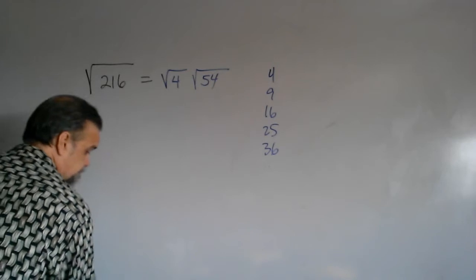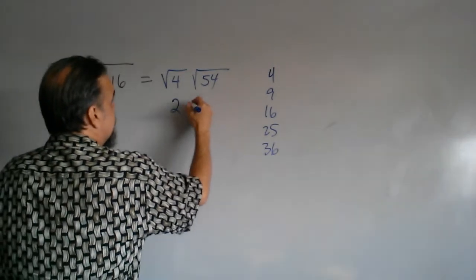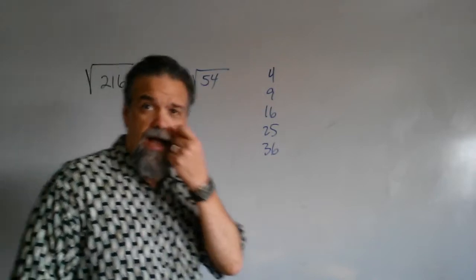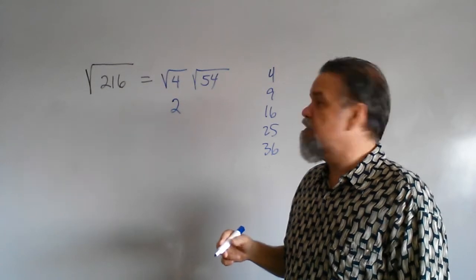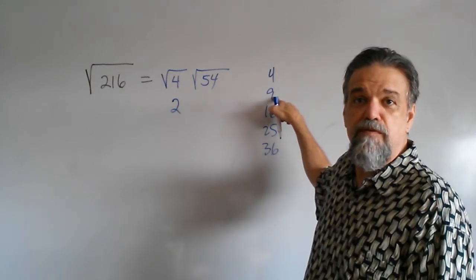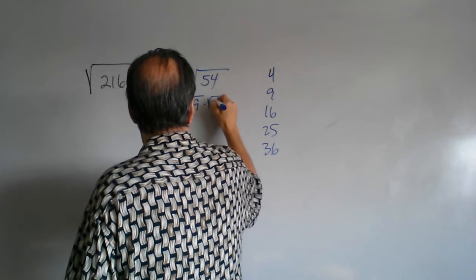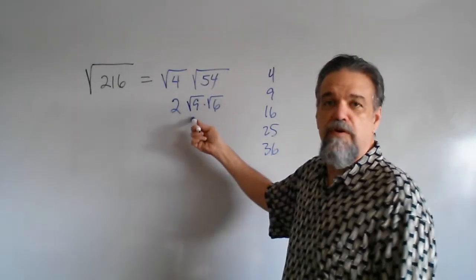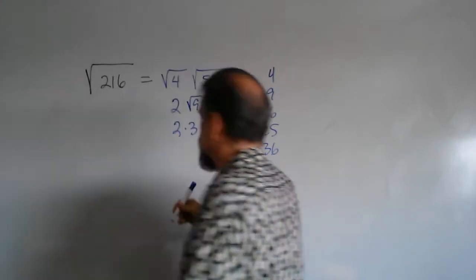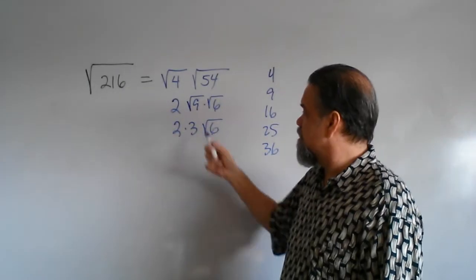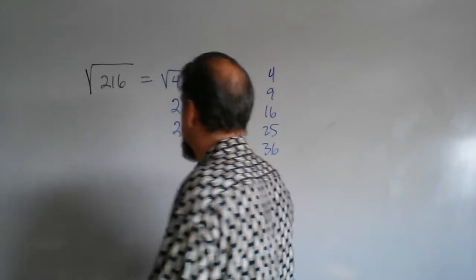Now the square root of 4 — I know what that is. That's 2. And the square root of 54 — I'm thinking I can continue to simplify this. 9 goes into 54; it's 9 times 6. So this will be the square root of 9 times the square root of 6. The square root of 9 is, of course, 3. So this is 2 times 3 times the square root of 6. And if I take 2 times 3, I get 6 times the square root of 6.